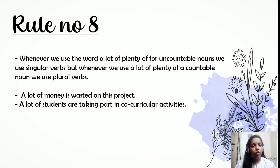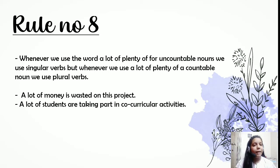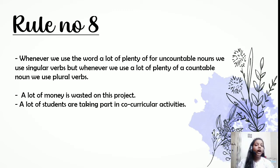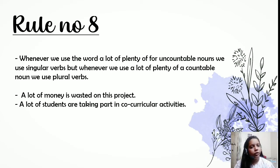Rule eight: when 'a lot of' or 'plenty of' is used with an uncountable noun, we use a singular verb; when used with a countable noun, we use a plural verb. For example, 'a lot of money is wasted on this project' — 'money' is uncountable so we use 'is.' But 'a lot of students are taking part in co-curricular activities' — 'students' is countable so we use 'are.' Simply: uncountable noun takes a singular verb, countable noun takes a plural verb.